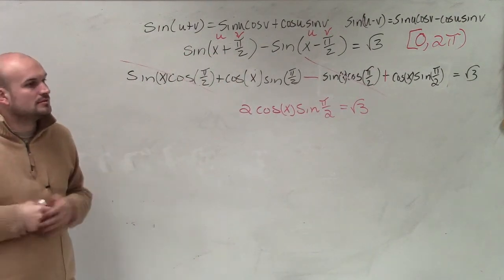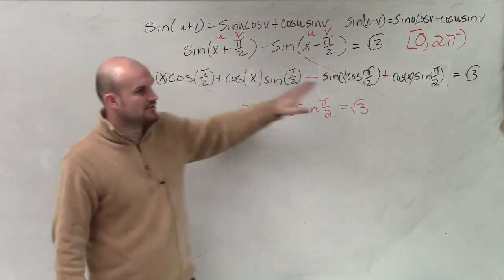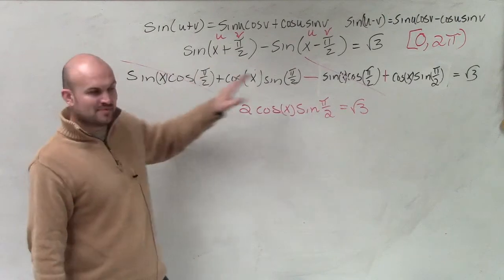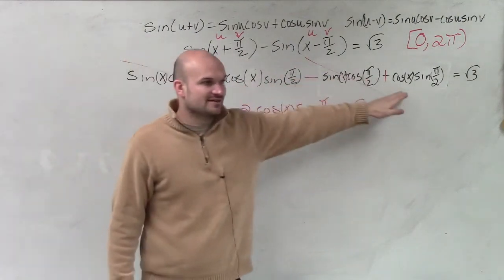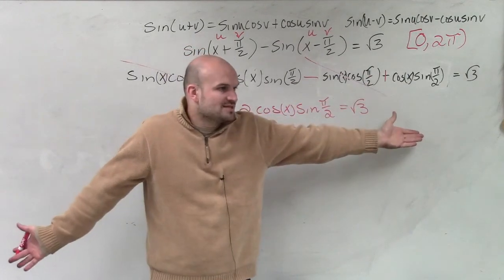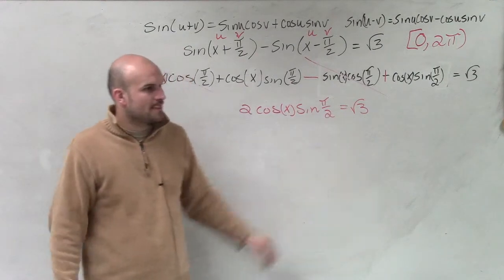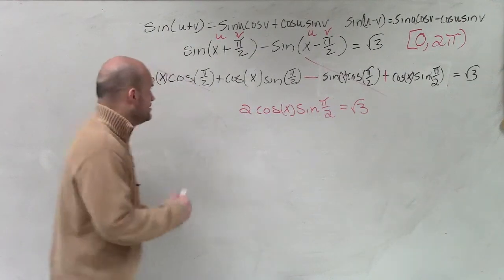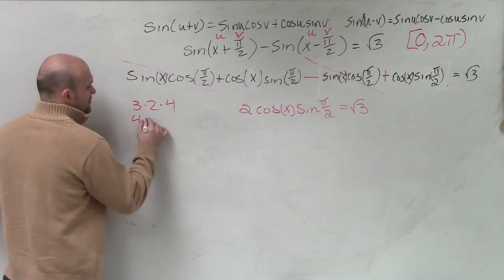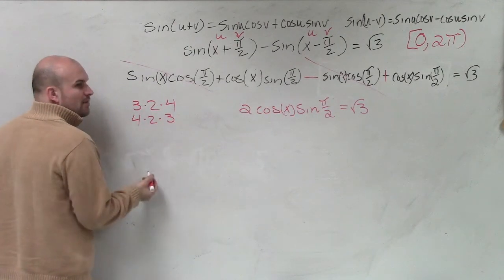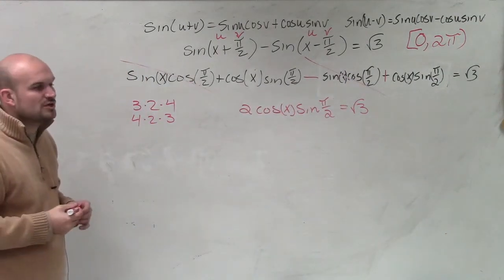Do you understand how these added to 0? Same thing. One's positive, one's negative. These are also the same thing, but they're both positive. It's like x plus x is 2x. So it's 2. And it turns out 2 outside of cosine of x? You don't need to. 3 times 2 times 4 is the same thing as 4 times 2 times 3. It doesn't matter how I multiply them. It's 2 times cosine of x times sine of π halves. It doesn't matter which order you do.